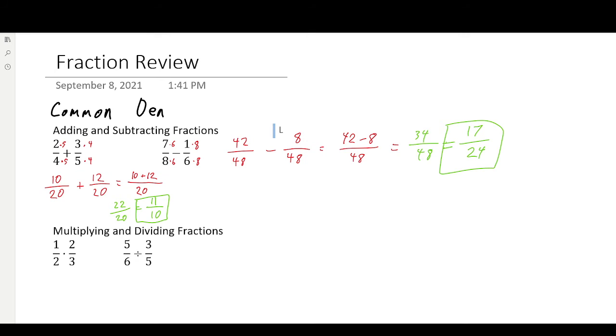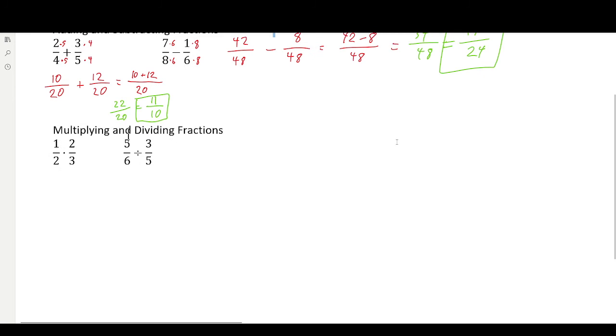Now let's take a look at multiplying and dividing fractions. So this one is actually a little bit simpler. Multiplying is the easiest one. You're just going to multiply the tops and multiply the bottoms, so straight across and straight across like that. So 1 times 2, 2 times 3. So what's that going to equal? We're going to have 2 over 6, and we can simplify that to 1 third.